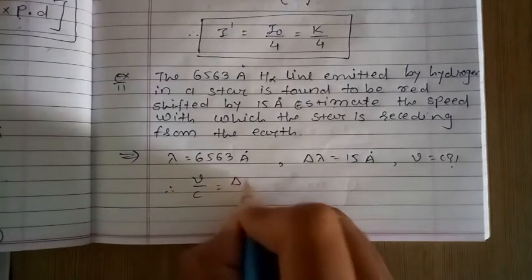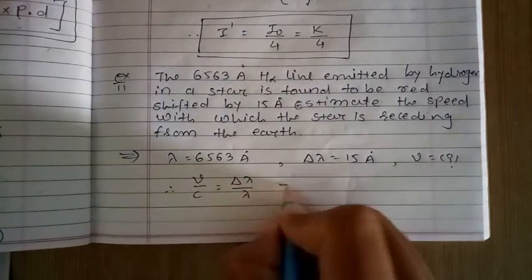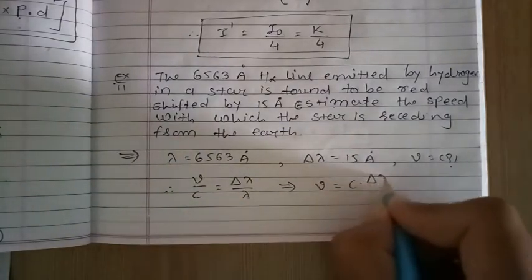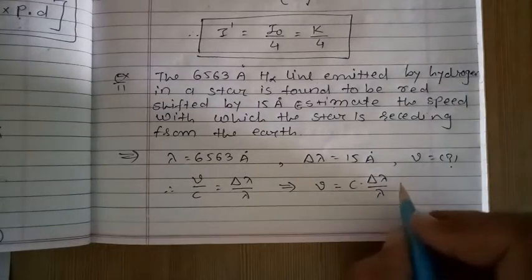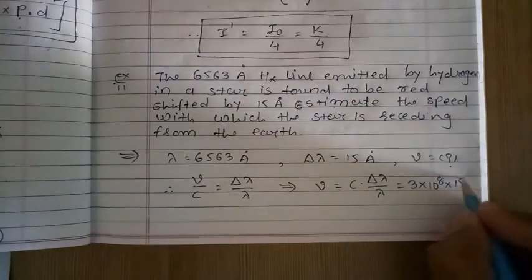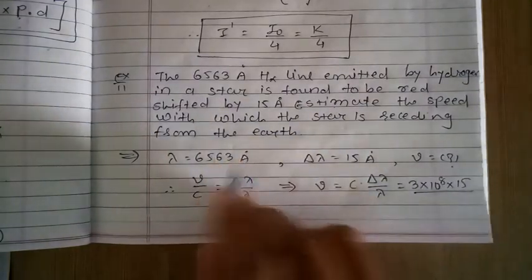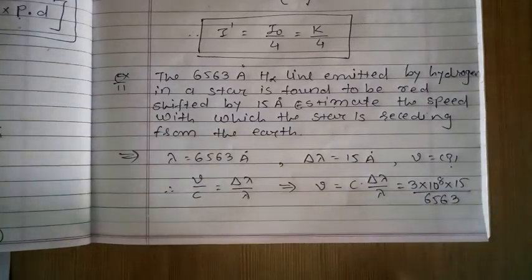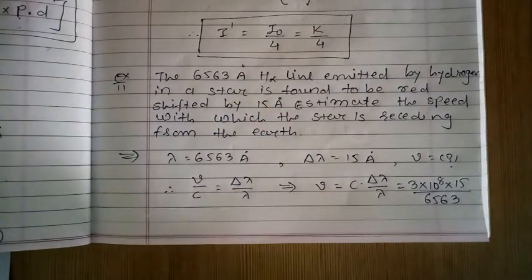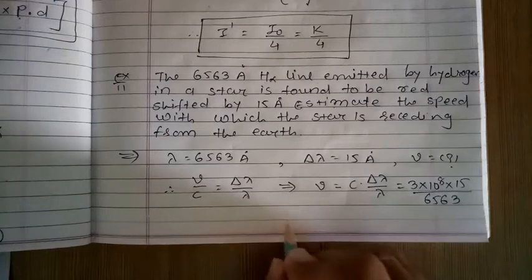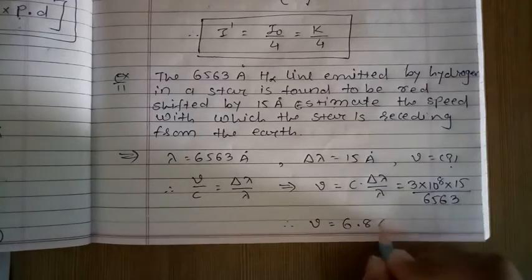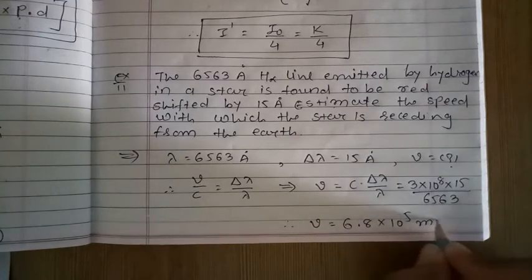We know the formula V by C equals delta lambda by lambda. The value of C is 3 into 10 raise to 8. Delta lambda is 15 and lambda is 6563. Angstrom units cancel. So we get V is equal to 6.8 into 10 raise to 5 meter per second.